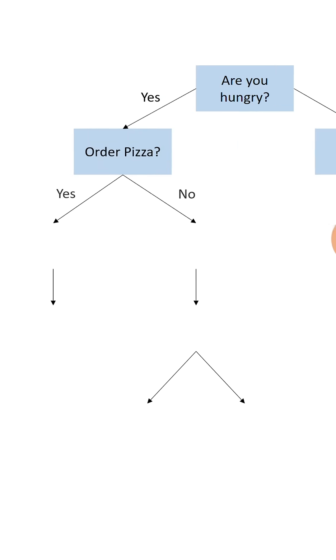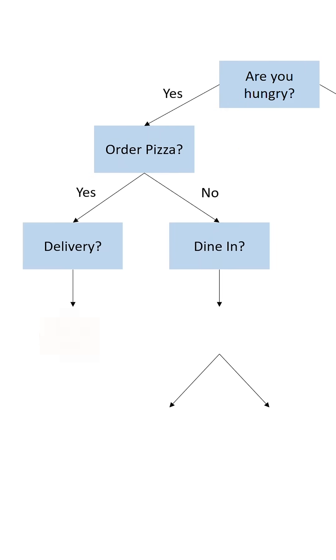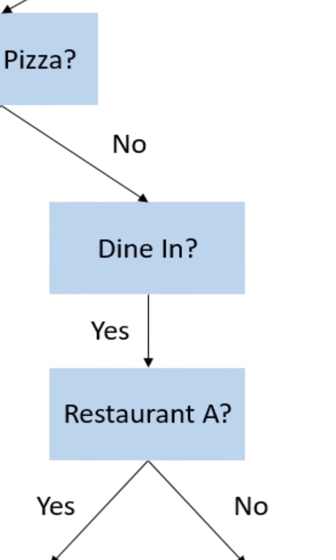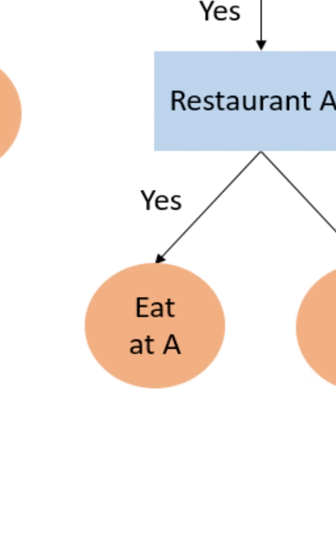If you chose pizza, you ask delivery or dine-in. If it is dine-in, you ask restaurant A or restaurant B. Just keep breaking it down. Eventually, you'll reach a point where your final decision will be something like margarita at restaurant A.